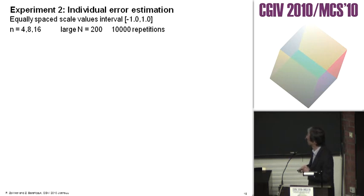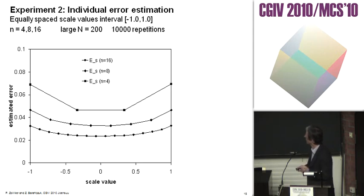The second experiment tests where we need or why we need an individual error estimation. We use equally spaced scale values in the interval of minus one to one and use a large number of n to omit the influence of the bias, making again 10,000 repetitions.